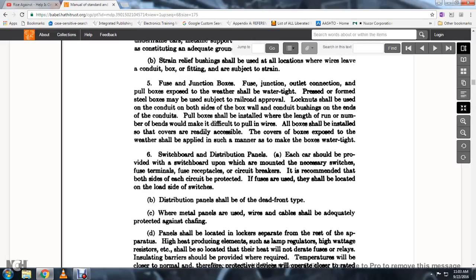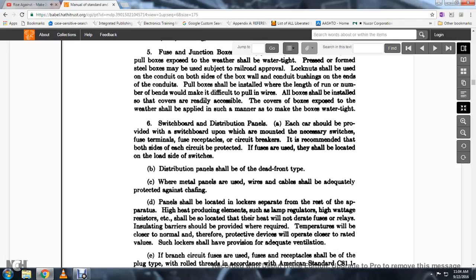Switchboard and Distribution Panel: Each car should be provided with a switchboard with the necessary switches, fuse terminals, fuse receptacles, and circuit breakers. It is recommended that both sides of each circuit breaker circuit be protected. If fuses are used, they should be located on the load side of the switch. Distribution panels should be either on the dead front type. When metal panels are used, wiring cables will be adequately protected with shafting.